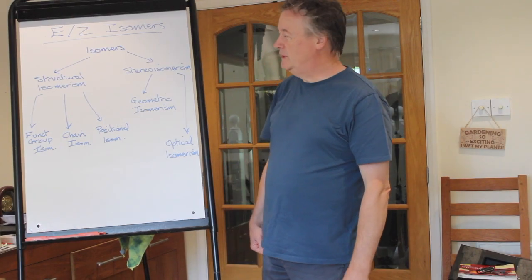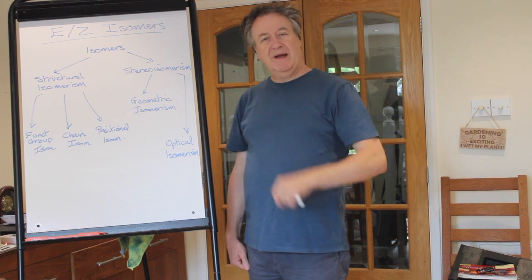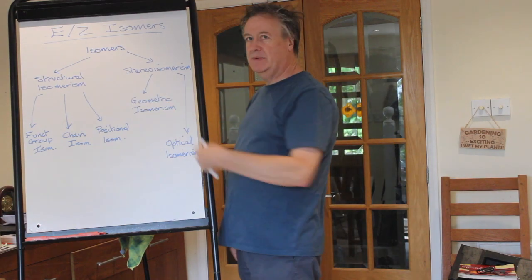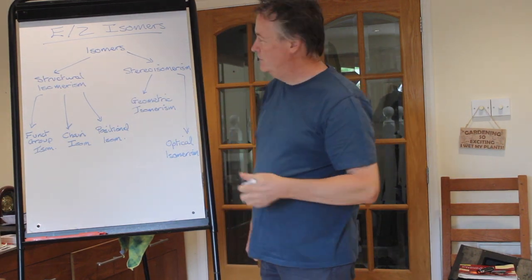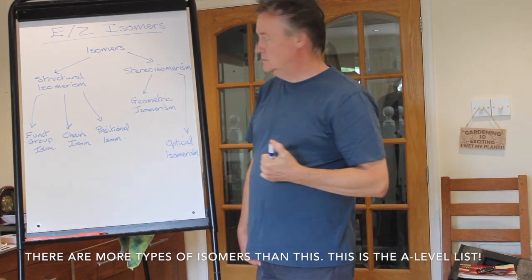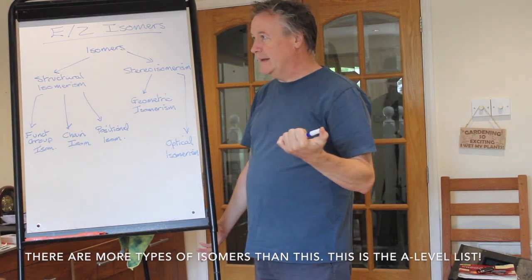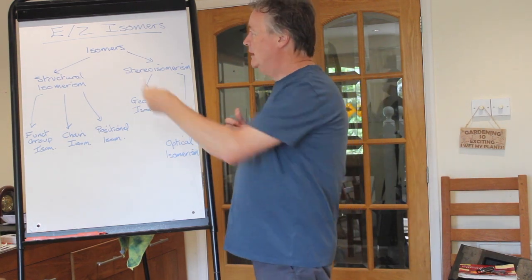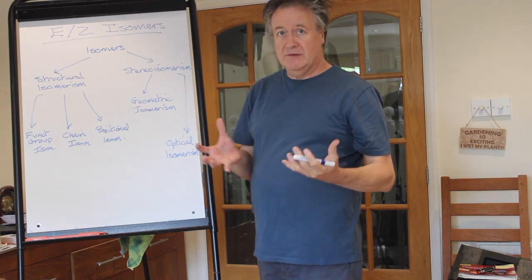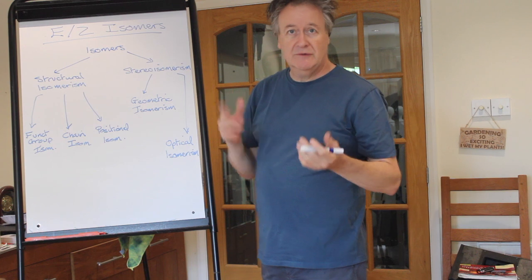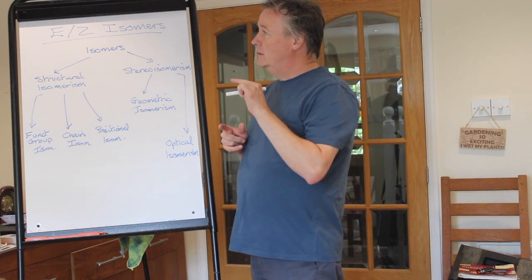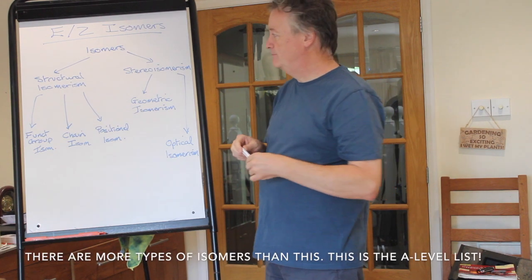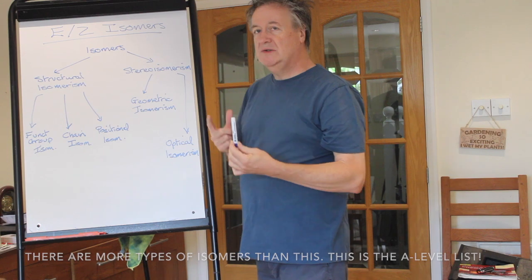Hello again, time for another revision video. Got asked about E/Z isomers and how you name them. This is part of a bigger picture - the picture of isomerism. Talking about organic chemicals, ones with carbon chains. As a result you get a number of different types of isomerism - isomers being where everything is the same in terms of number of carbons, hydrogens, whatever else is present, but you put it together differently. There are five types of isomer.